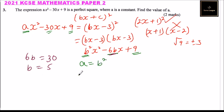Since we've obtained b = 5, we have a = 5² = 25. So the value of a is 25, and by doing that you get two marks.